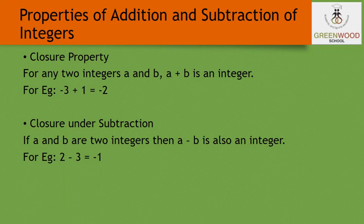Minus 2 is also an integer. Second is closure under subtraction — we will check the closure property for subtraction. For any two numbers a and b, if I subtract b from a, the result should be an integer. For example, if I take 2 and 3 and subtract 3 from 2, I get minus 1, which is also an integer. So closure property is applicable on both addition and subtraction of integers.